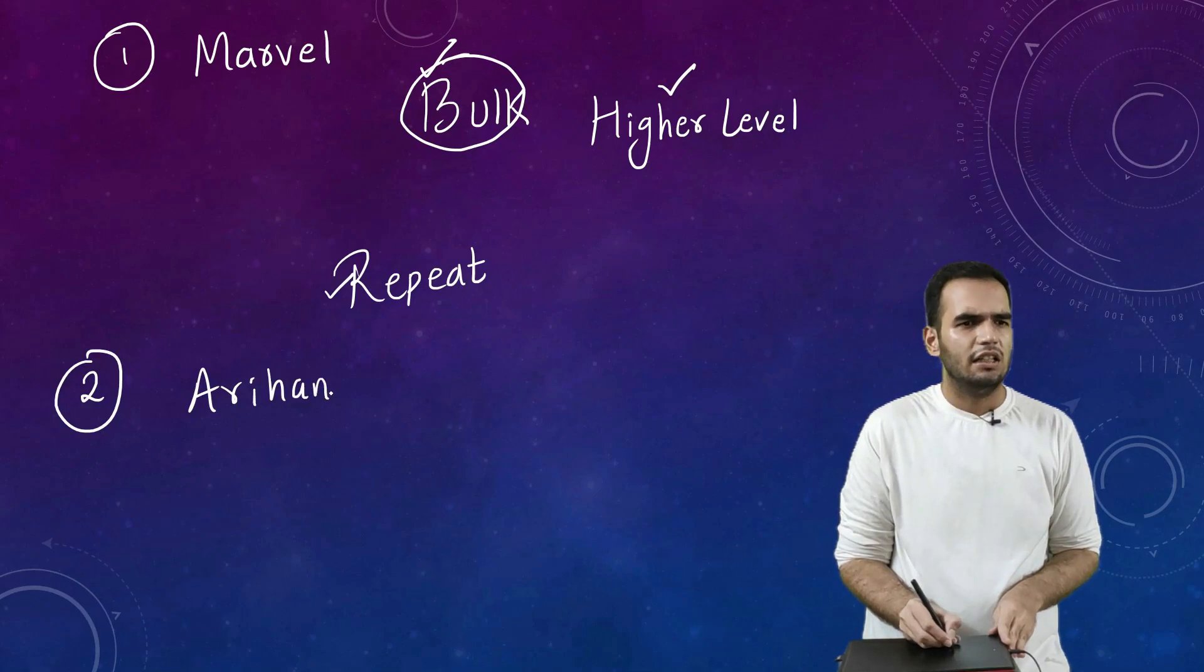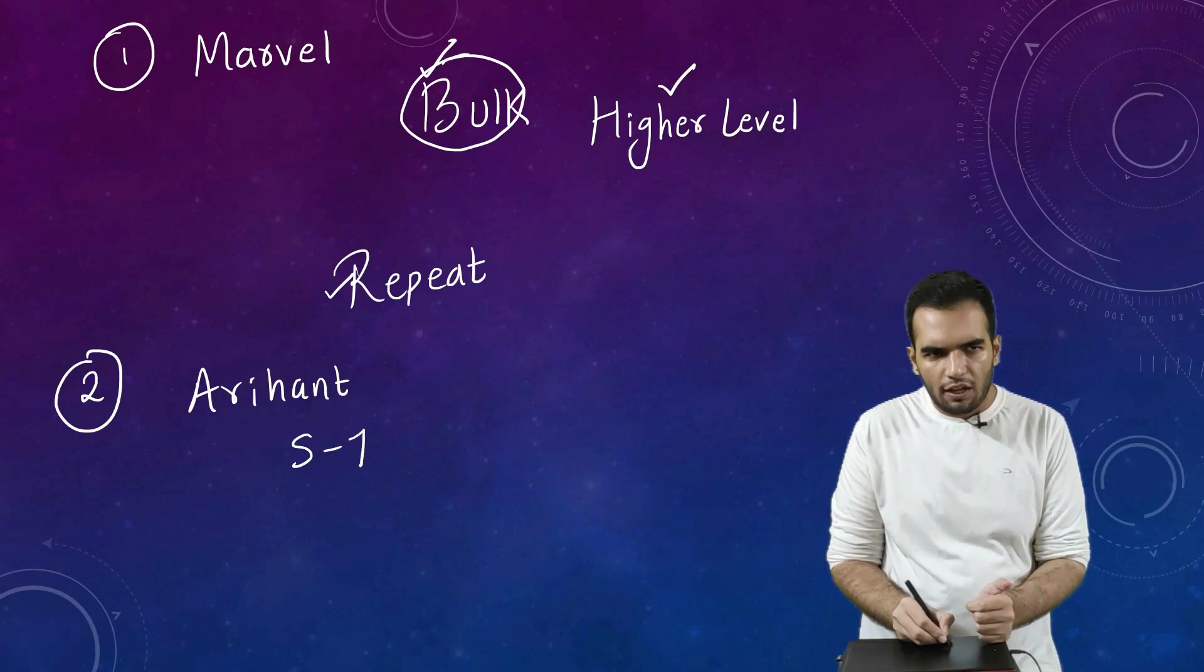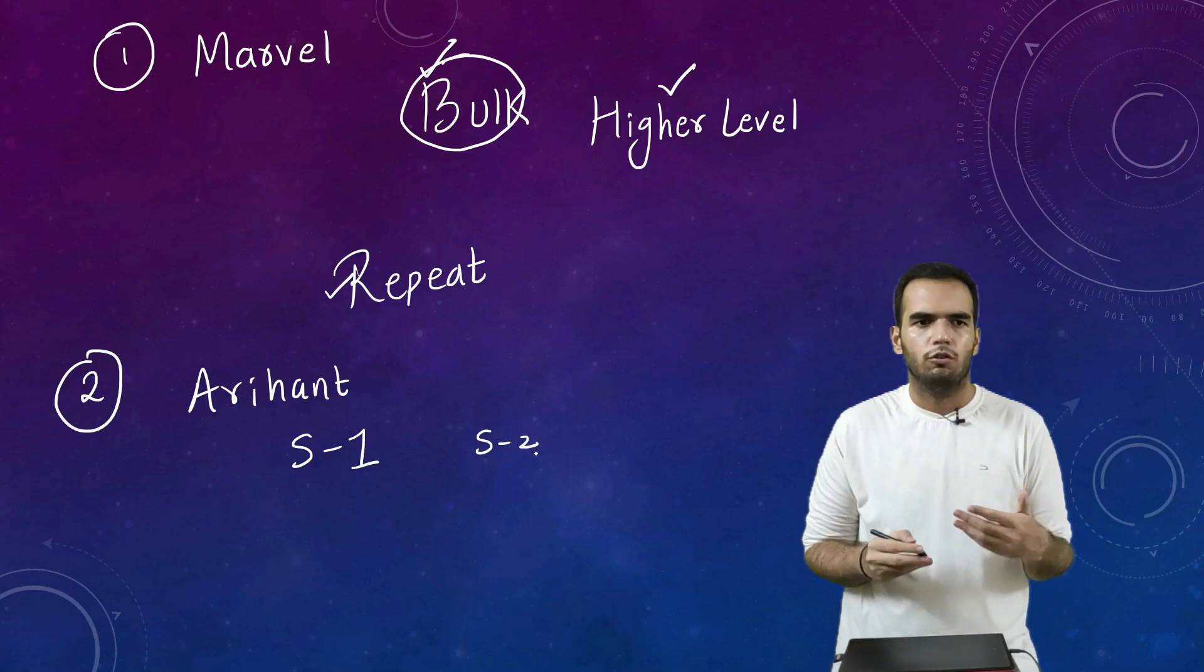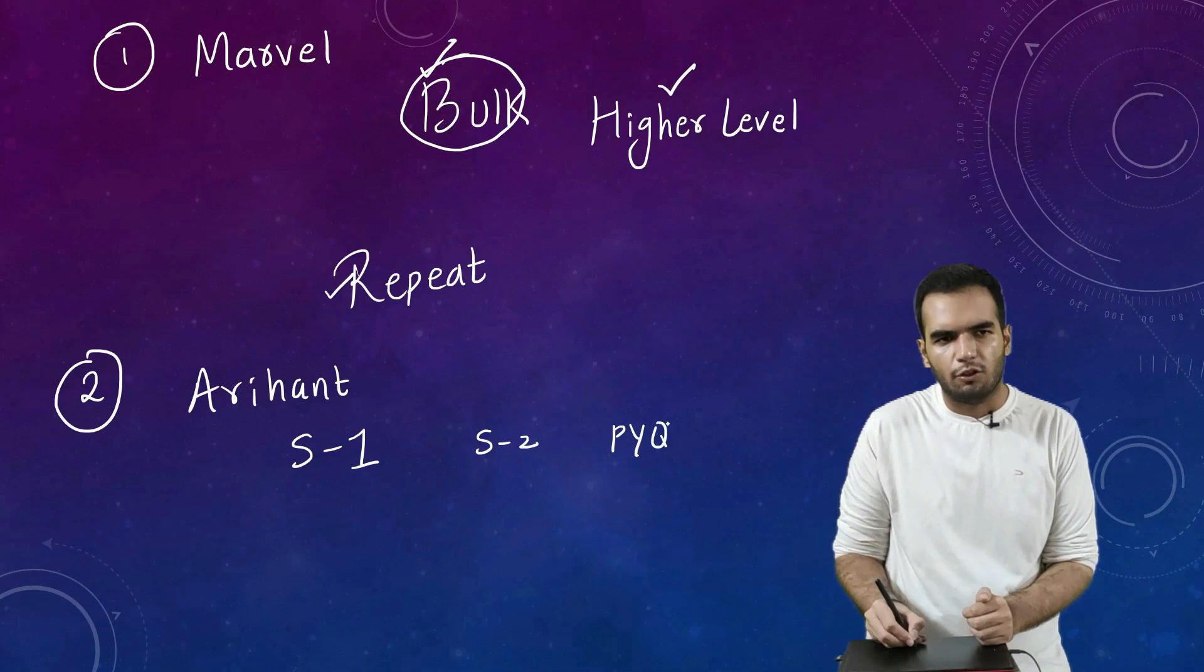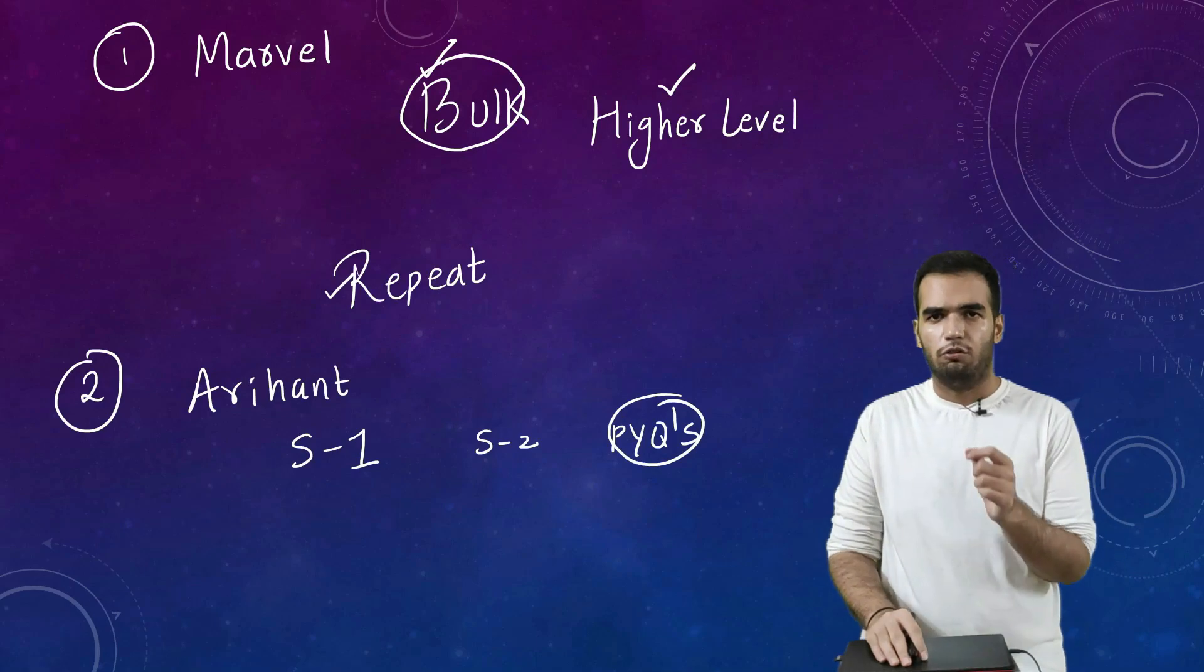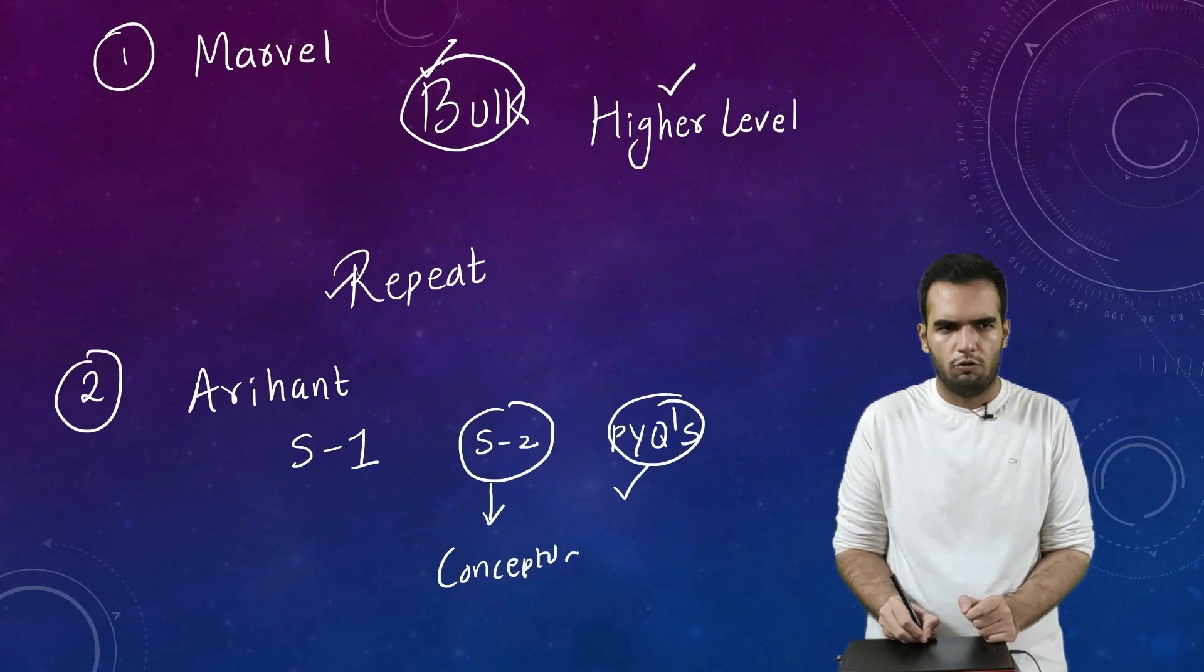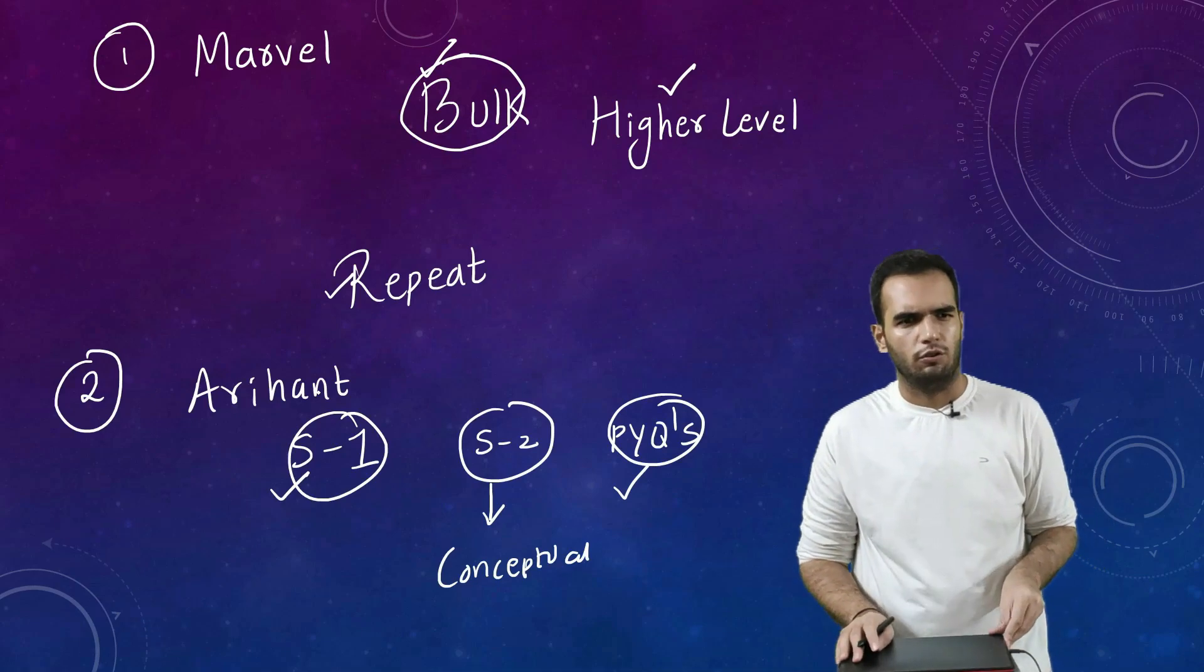If we talk about the second book, Target, it divides sections. Section 1 is topic-wise. Section 2, of course Marvel also has topic-wise. Then there's a PYQ's section. So PYQ's section is very good because there are 20 years of questions covered. Section 2 has conceptual questions, and section 1 has mixed sort of questions.